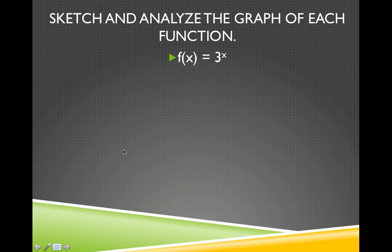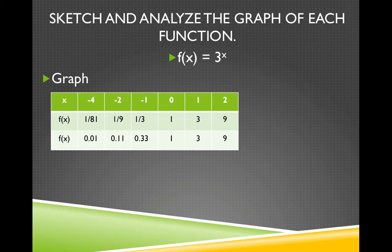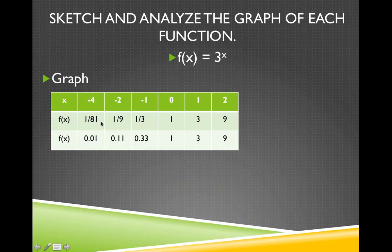Let's look at this exponential function: f of x equals 3 to the x. The first thing we want to do is graph this function. To do that, we're going to pick some x values and find out what y is by making a table. The domain is all real numbers, so we can put in any x value. Starting with negative 4: 3 to the negative 4th means the reciprocal of 3 to the 4th. 3 to the 4th is 81, so its reciprocal is 1 over 81, which rounds to .01.